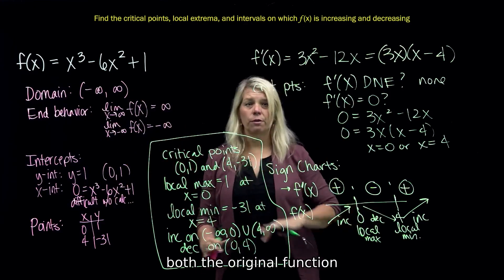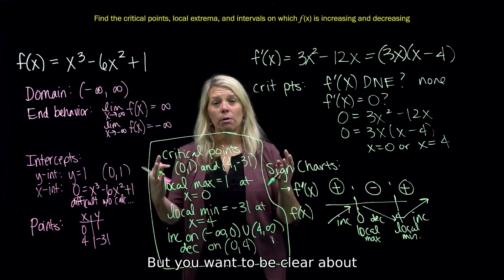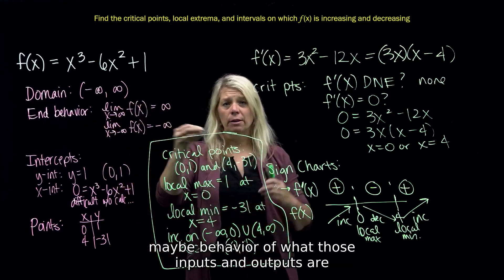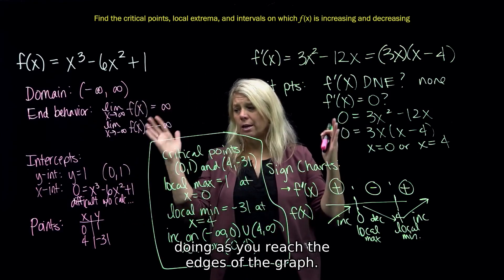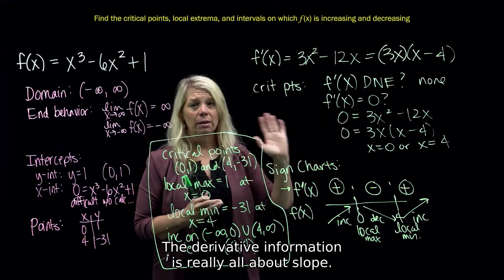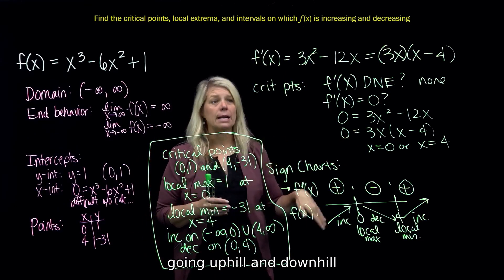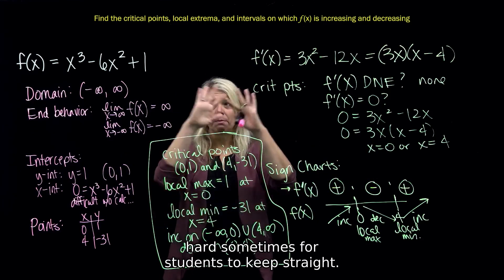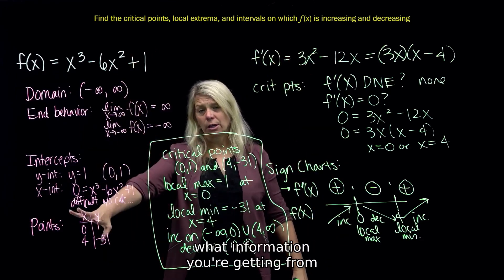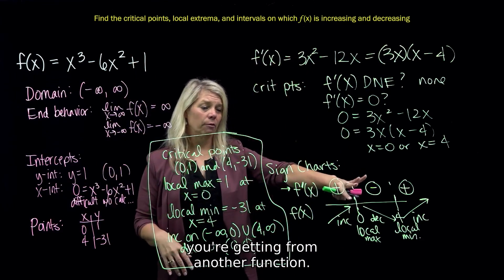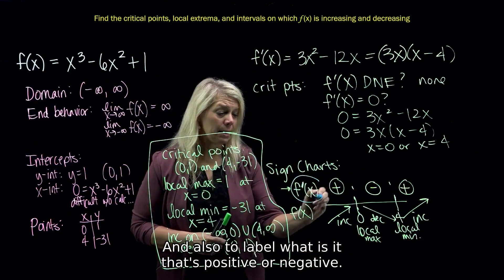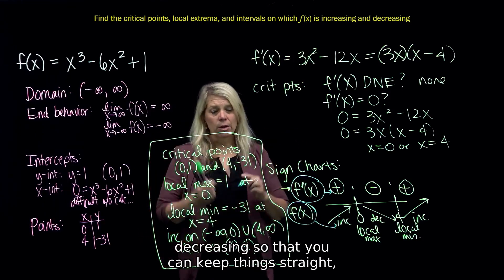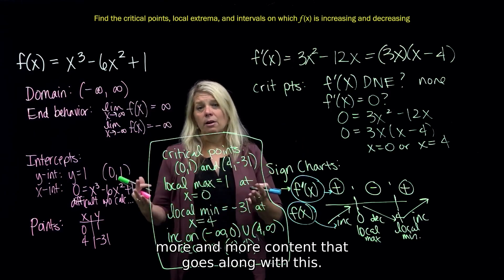Notice that answering these questions used both the original function and the first derivative. The original function gives you inputs, outputs, and edge behavior. The derivative is all about slope — when the function is going uphill, downhill, or switching between them. Keep your work organized so it's clear which information comes from which function, and label what is positive or negative — it's the first derivative — and what is increasing or decreasing — it's f(x).